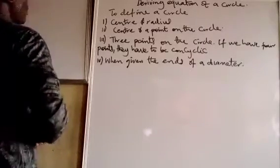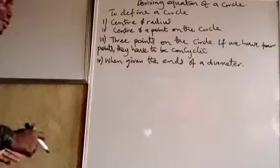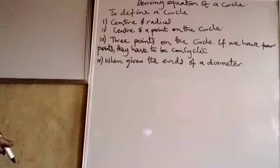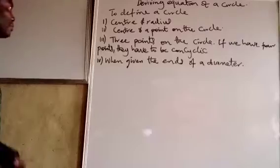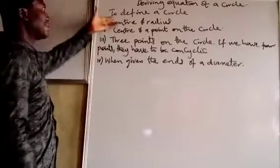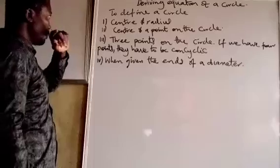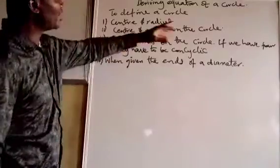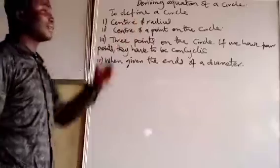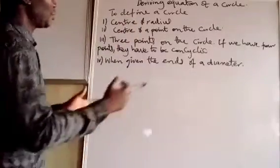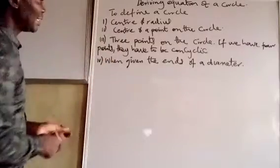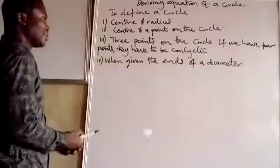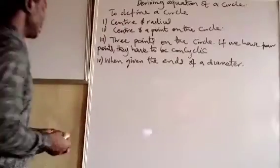We are trying to talk about how we get the equation of the circle when we are given some conditions. The conditions we might be given are: they can give us the center and radius, or we might be given the center and a point on the circle. When we are given the center and the radius, all we need to do is x minus the x-coordinate of the center, y minus the y-coordinate of the center, we square the two and it's equal to the radius squared.